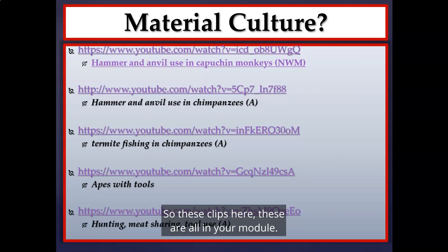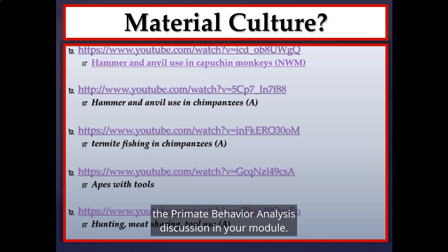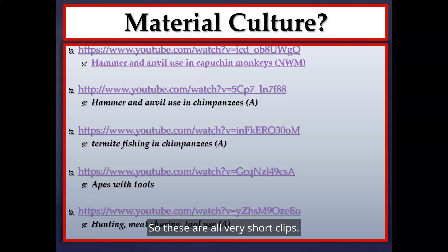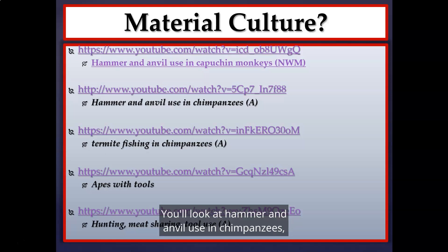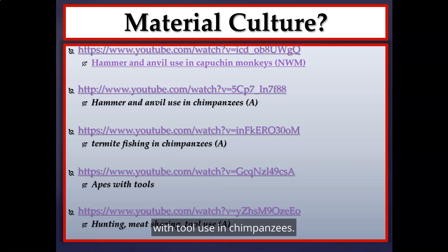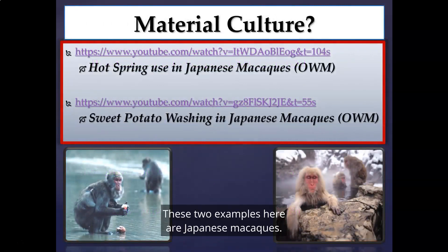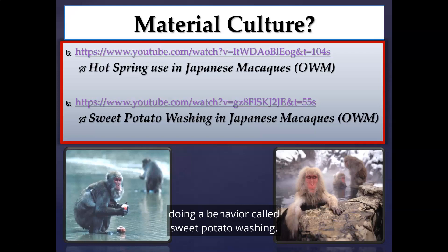The video clips provided in the module are important for completing the primate behavior analysis discussion this week. You will watch hammer and anvil use in capuchin monkeys and chimpanzees, termite fishing in chimpanzees, various examples of apes using tools, hunting and meat sharing with tool use in chimpanzees, Japanese macaques in hot springs, and Japanese macaques performing sweet potato washing.